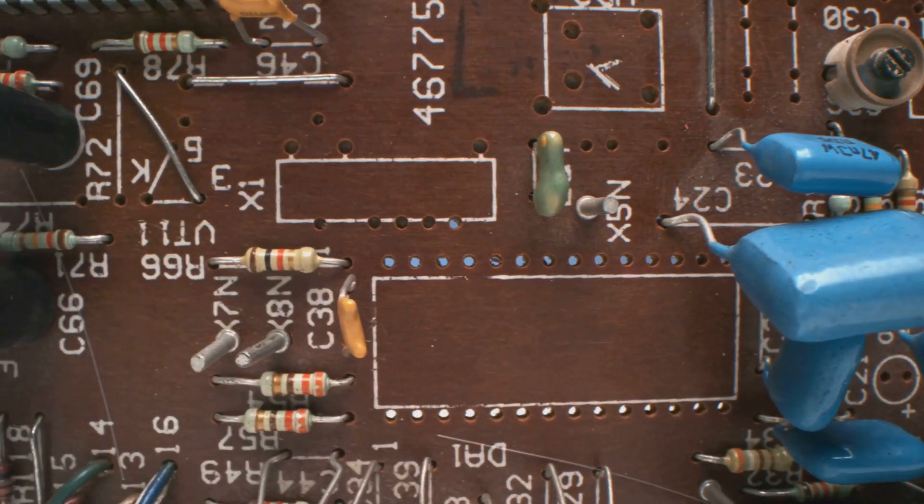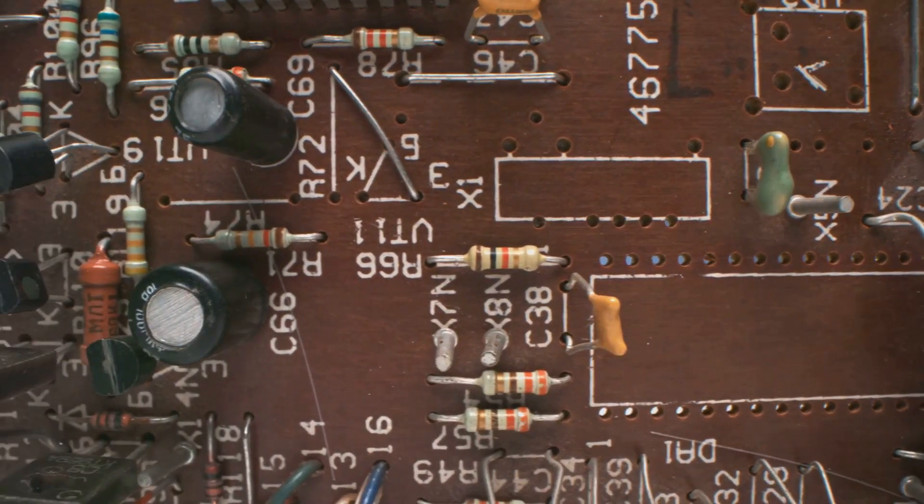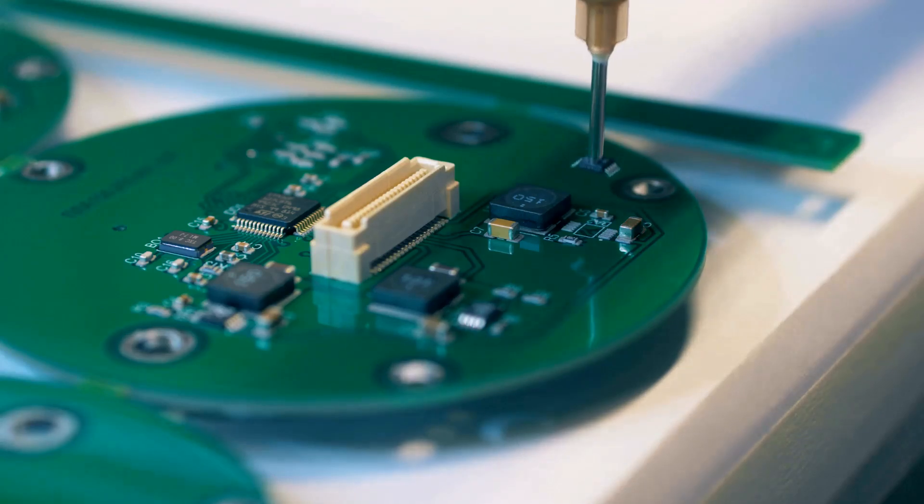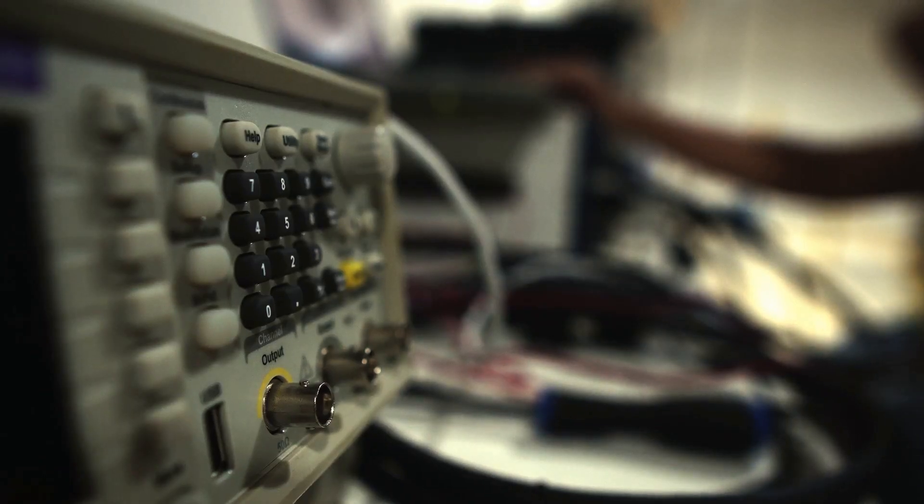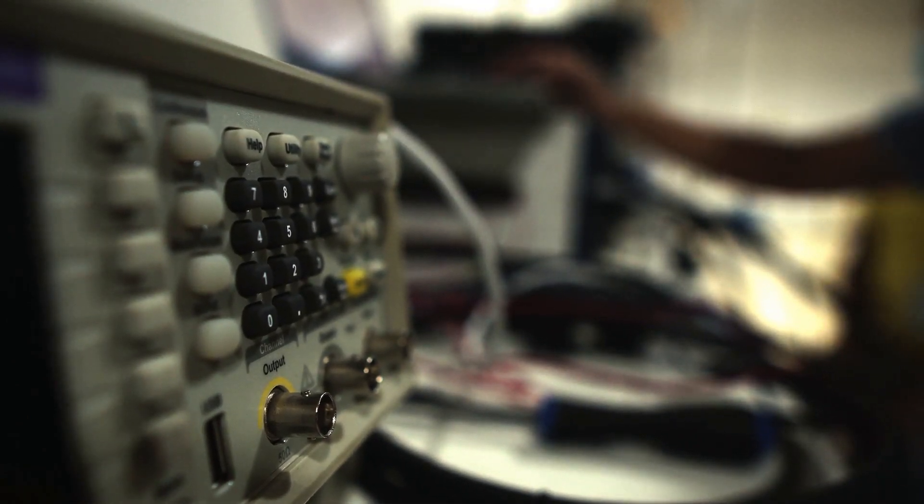Bridge rectifiers are commonly used rectifier circuits. They employ four diodes arranged in a bridge configuration. This arrangement ensures that both the positive and negative half cycles of the alternating current waveform are utilized, resulting in a more efficient conversion of alternating current to direct current power.